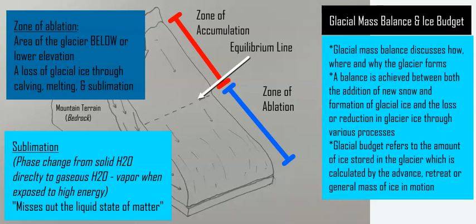So the zone of ablation is where the glacier decreases in mass, breaks down, erodes and weathers, and either retreats up the mountainside, or during an ice age — say 20,000 years ago — the glacier is going to advance and get larger, but there will still be some level of ablation. So you have these two sections: accumulation and ablation, and the area that separates them is called the equilibrium line.